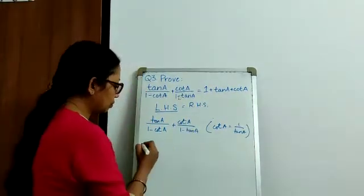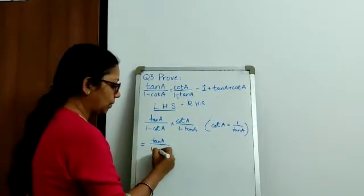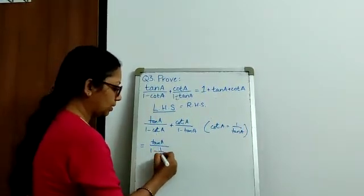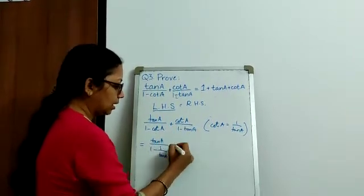So, when we do so, we get tan A, 1 minus, this cot A becomes 1 by tan A.